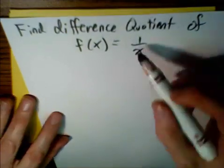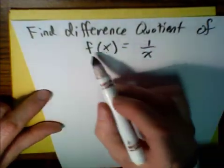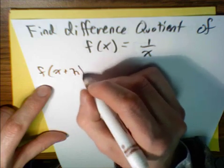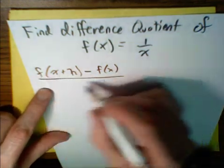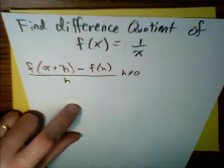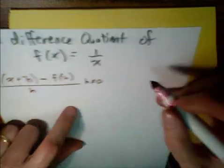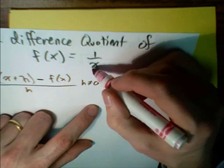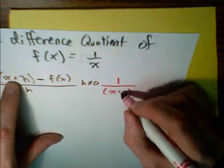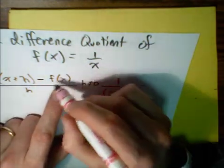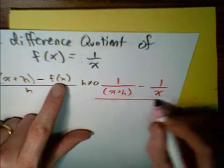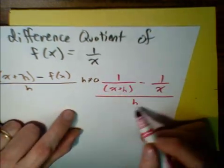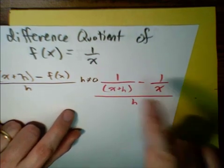Let's try another one. This one's going to be a little tricky because we're working with a fraction. The difference quotient of f of x equals 1 over x is f of x plus h minus f of x, all over h, with h not equaling 0. So we get 1 over the quantity x plus h, minus 1 over x, all over h. This is a complex rational expression — the denominator is h, but the numerator contains fractions that we need to simplify.